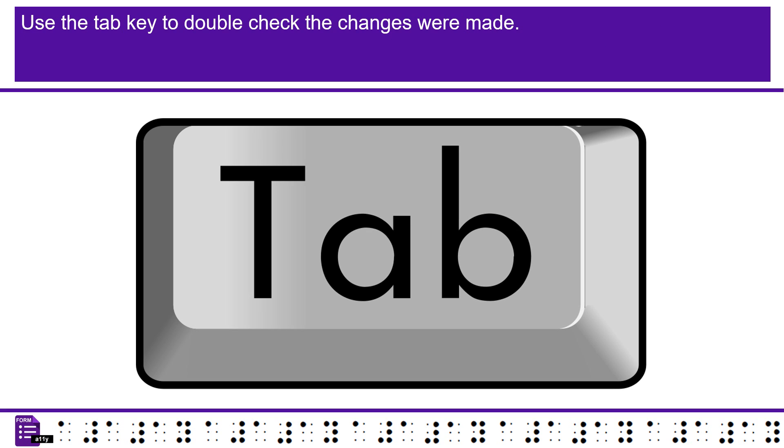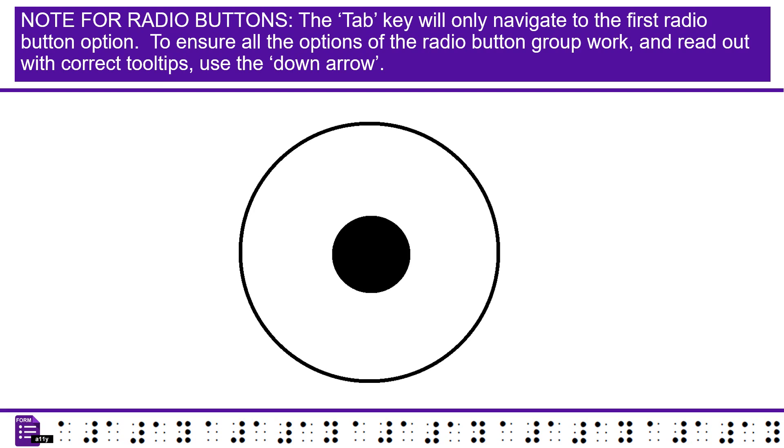Use the tab key to double-check the changes were made. Note for radio buttons, the tab key will only navigate to the first radio button option. To ensure all the options of the radio button group work and read out with correct tooltips, use the down arrow.